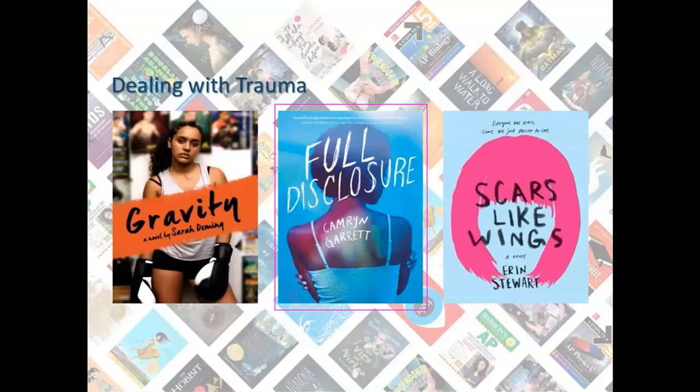Scars Like Wings by Erin Stewart is out October 1st. This is a story about a serious burn victim going back to high school after an accident that destroyed her entire world. She lost her parents and is now living with her aunt and uncle. She meets a fellow survivor and begins to feel like maybe she doesn't have to face the nightmare alone. Stewart focuses on the internal challenges of survivors affected by trauma without sugarcoating their circumstances — pushing readers to think about empathy, hope, and resilience through trauma. It has positive reviews from Kirkus, Publishers Weekly, and School Library Journal.